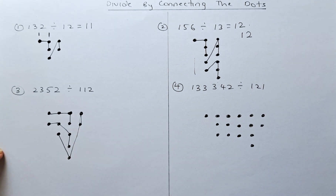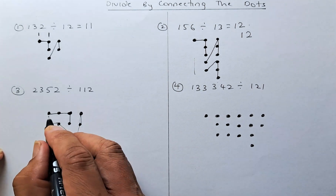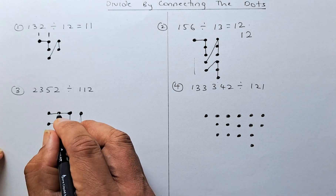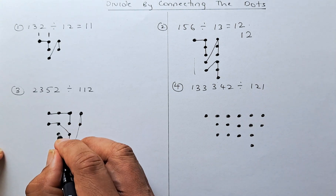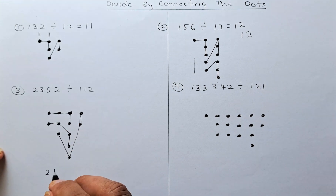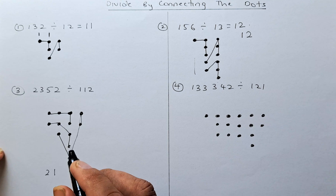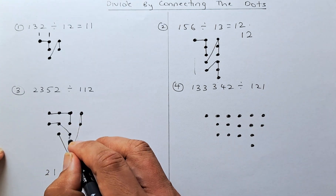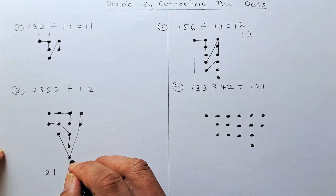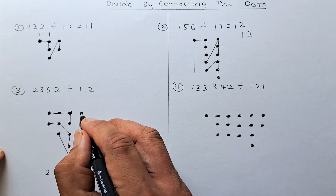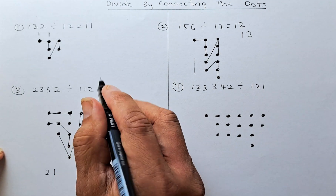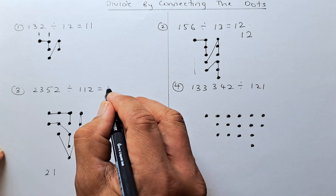Now count the starting points. The starting point count in the first column is two. In the next column, this is not a starting point, this is not a starting point, this is a starting point — so one. In the next column, none of these are starting points — so nothing. And the final column, none either — nothing. So the answer is 21.